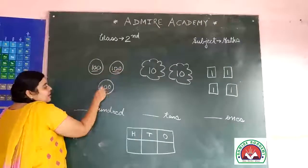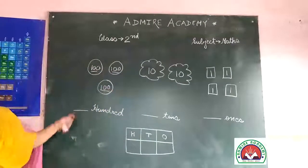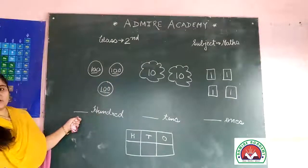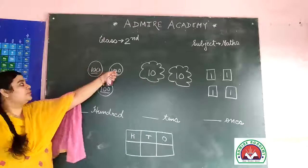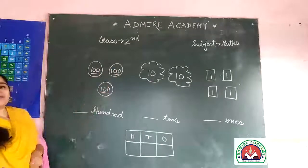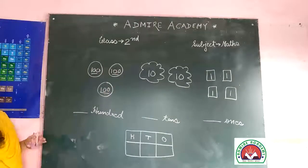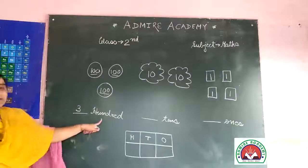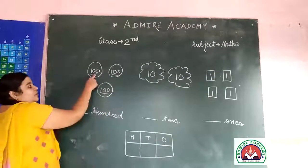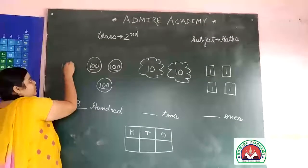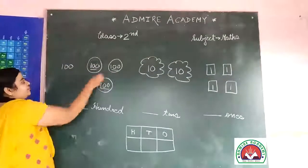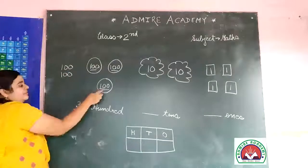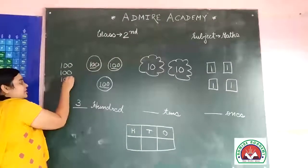So hundreds digits is one, two, and three. As there are three circles, therefore the number becomes three hundred. One hundred, second hundred, and third hundred.